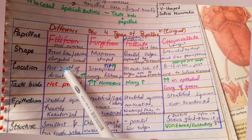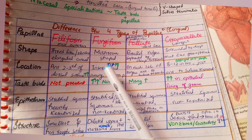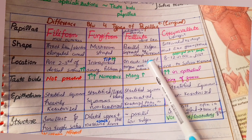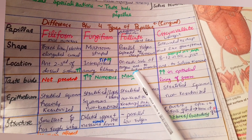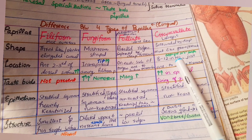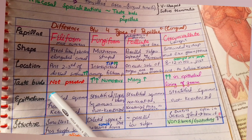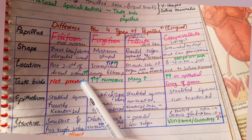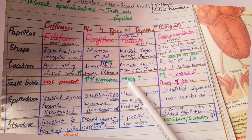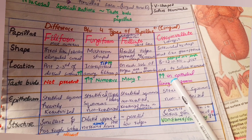Filiform papillae are numerous on the anterior two-thirds of the dorsal surface, whereas fungiform are numerous on the tip of the tongue. Foliate papillae are located on each side of the tongue anterior to the sulcus terminalis. Circumvallate papillae are 8 to 12 in number and are found just anterior to the sulcus terminalis. No taste buds are present in filiform papillae; fungiform and foliate papillae have numerous taste buds; and circumvallate papillae have taste buds in the epithelial linings of their grooves.